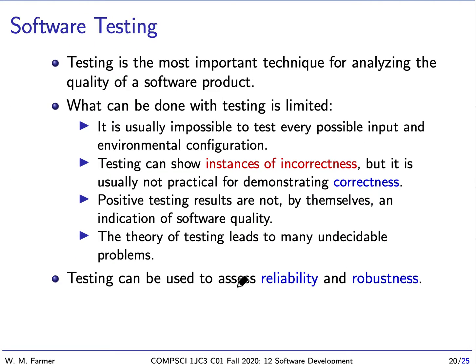Software testing is the most important technique for analyzing the quality of a software product, but what can be done with testing is limited. It's usually impossible to test every possible input and environmental configuration. So testing can show instances of incorrectness — we can run a test and see if the software works correctly — but it's not practical for demonstrating correctness.